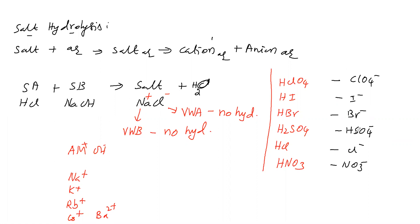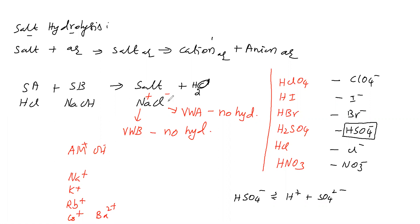For bisulfate, we leave it aside because it can dissociate to give H⁺ and SO₄²⁻, and SO₄²⁻ may undergo hydrolysis to some extent. The remaining anions from strong acids do not undergo hydrolysis. Therefore, if the salt is from a strong acid and a strong base, neither the cation nor the anion undergoes hydrolysis — this salt does not undergo hydrolysis at all.